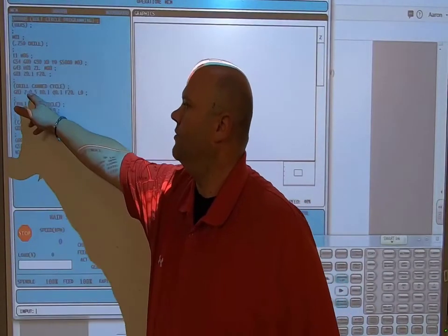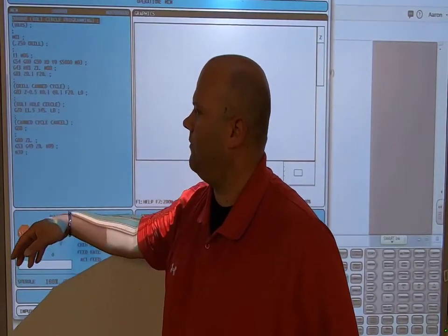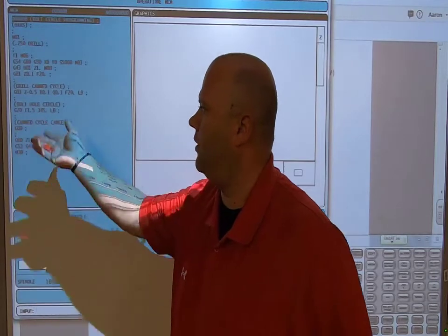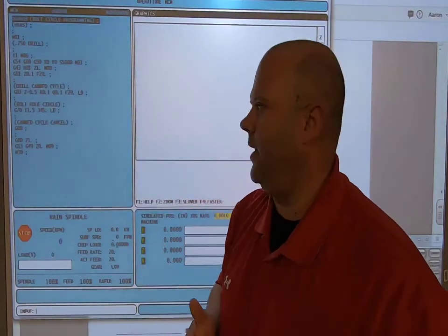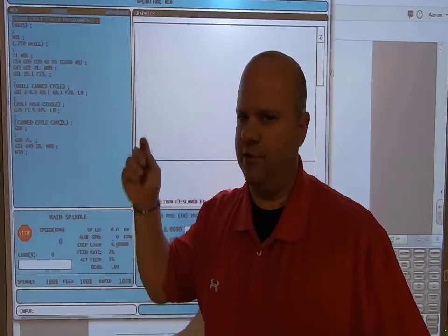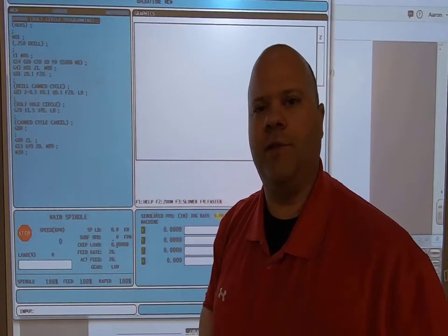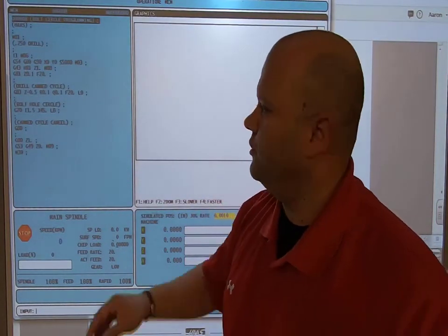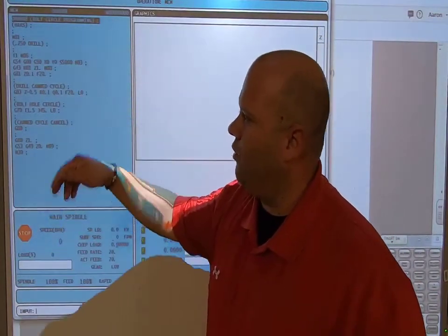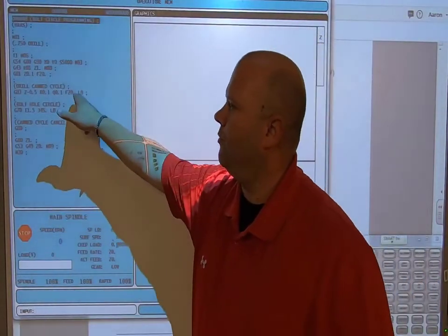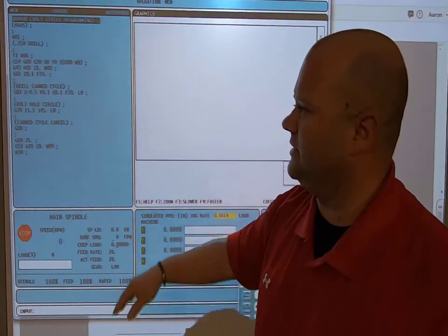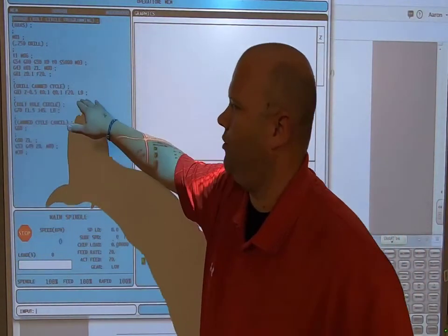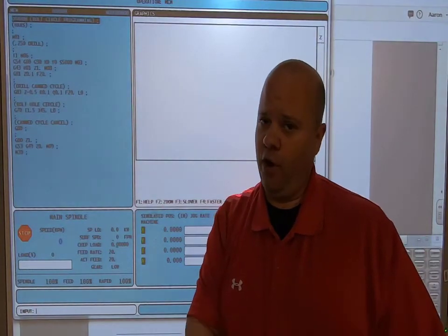Then I'm going into my drill canned cycle. I have G83, Z negative five thousand five hundred, R 100, and a Q. So I'm doing a deep hole. Normally in industry, you just go G81 all the way through, depends on the application. I'm using G83, going down a little bit at a time, but remember I have the L zero on there. With the L zero, this line of code will not drill a hole.